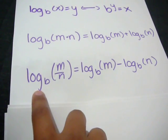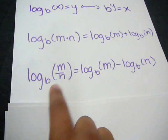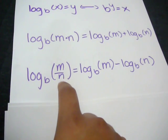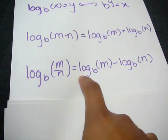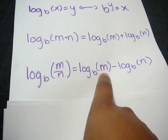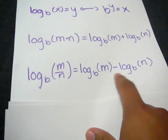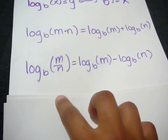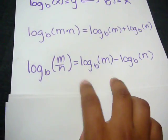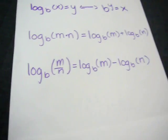The next property is that the log of m divided by n is equal to the log of m minus the log of n. And again, the bases have to remain the same.